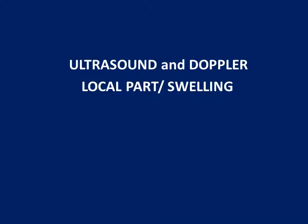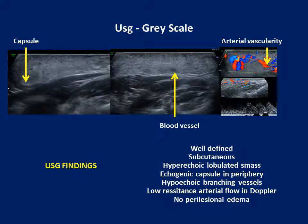On ultrasound, a well-defined subcutaneous mass lesion was seen. It was hyperechoic and lobulated in nature with a thin echogenic capsule well appreciated on the posterior aspect of the mass. There was a central hyperechoic tubular structure — a vessel — running through the mass lesion. On spectral Doppler, it showed arterial flow with low resistance. There was no perlesional edema in this patient.